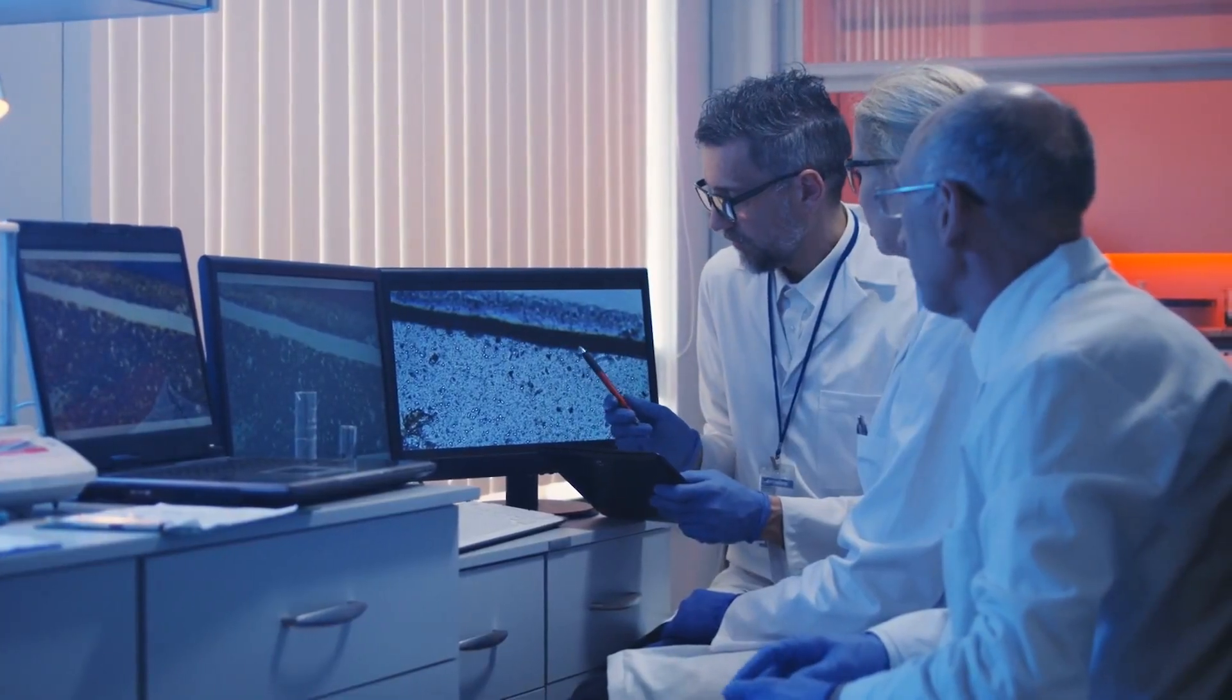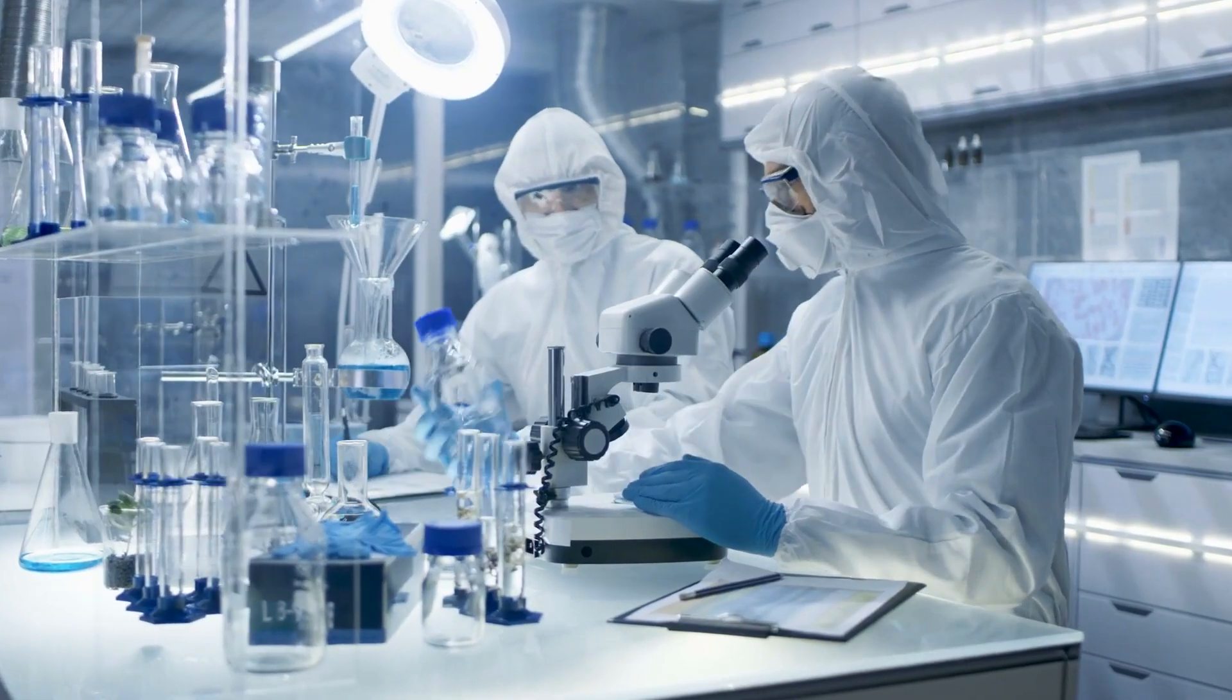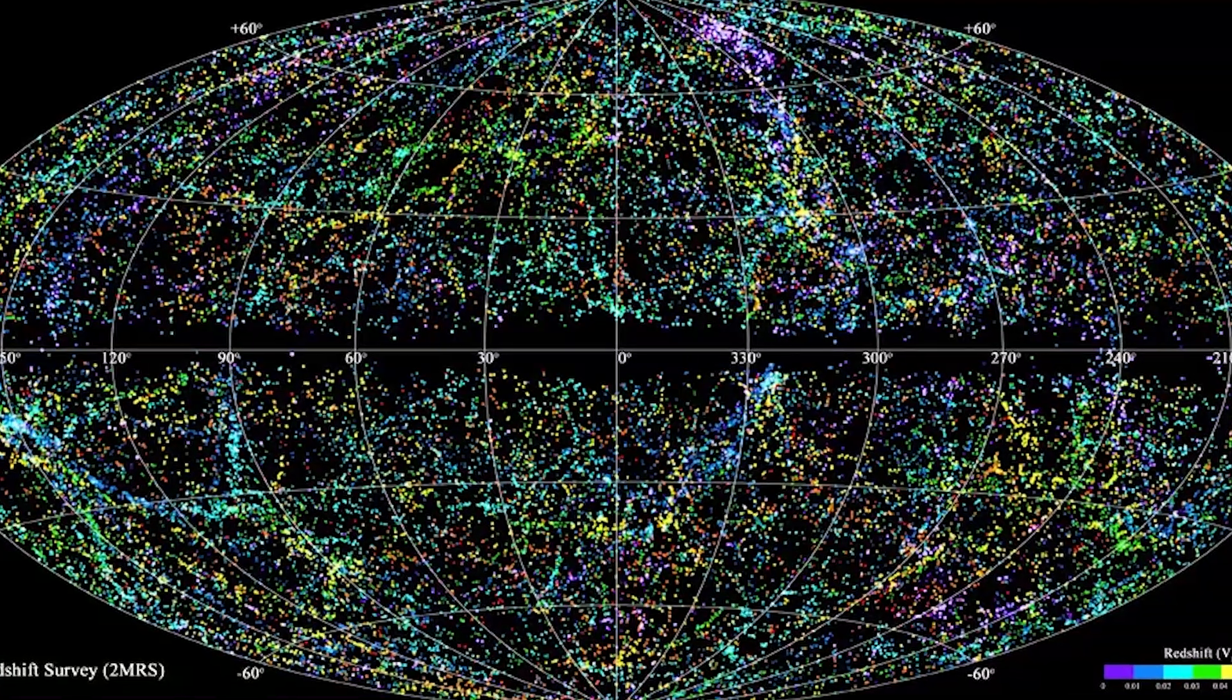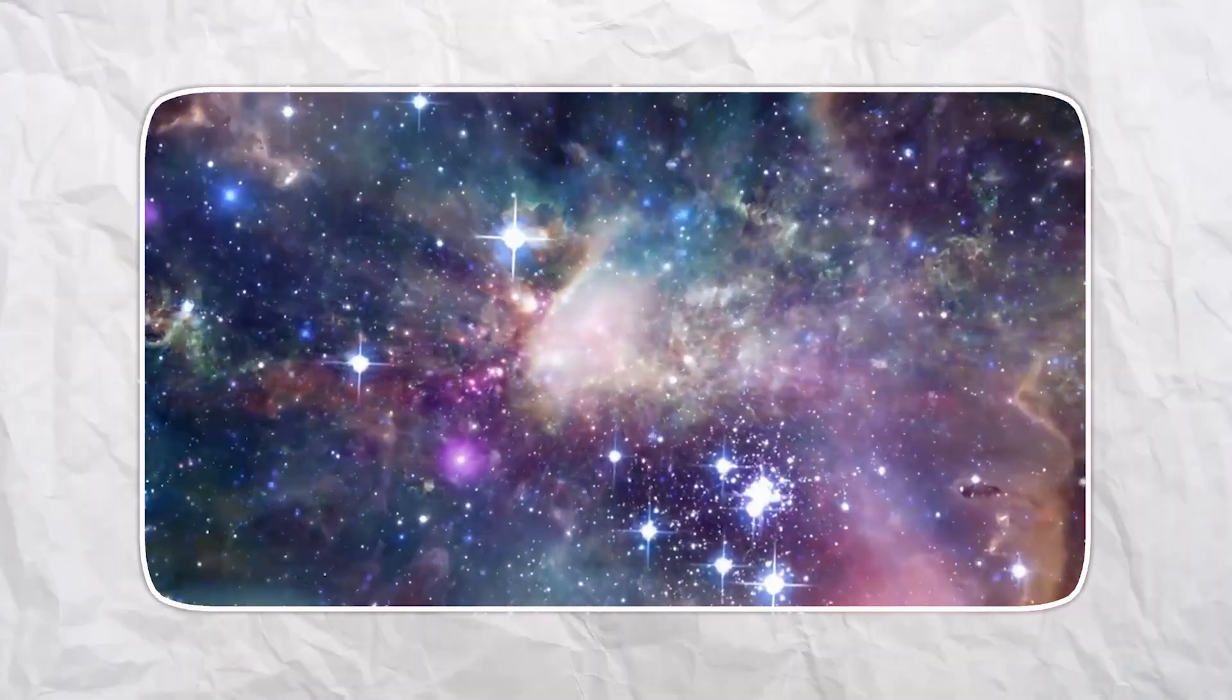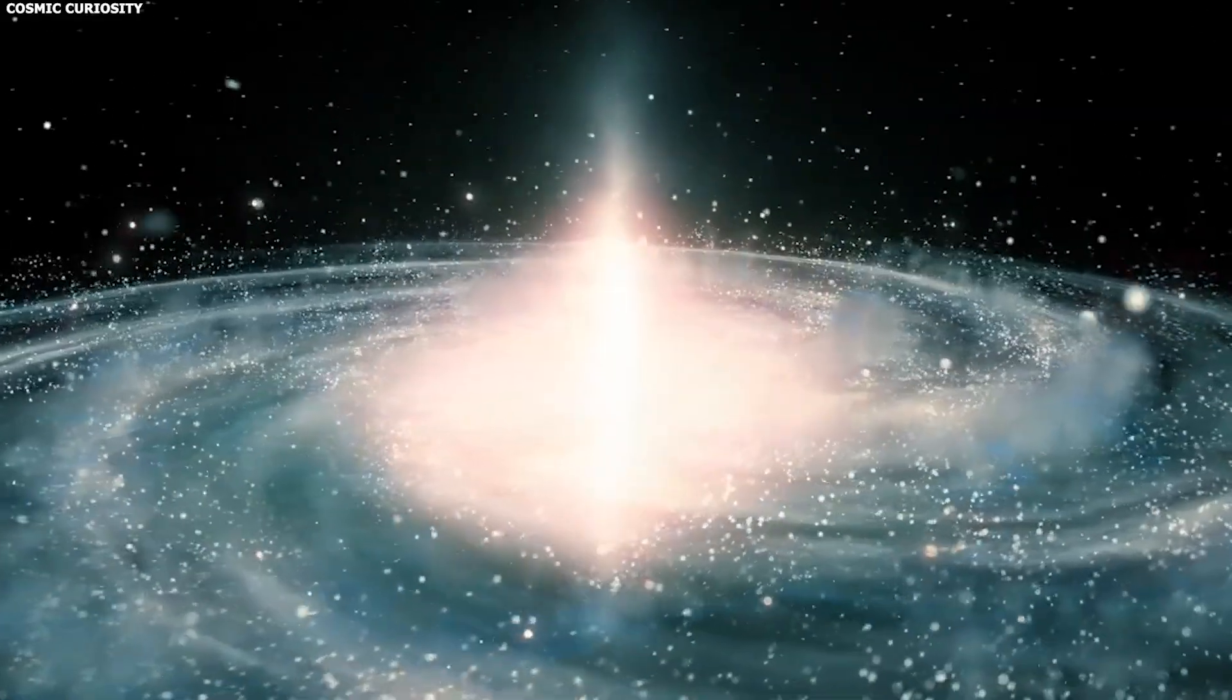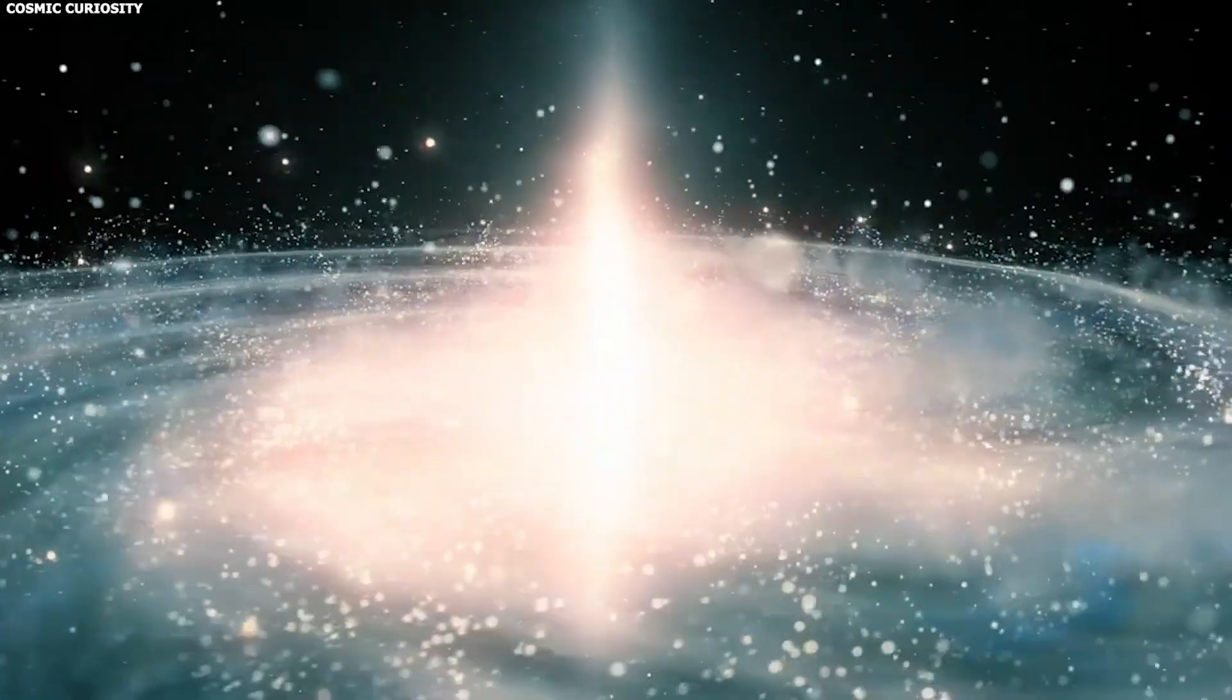Some scientists think we might even be living inside one of these impossible structures, a massive bubble called the KBC void that's about 2 billion light-years across with fewer galaxies than there should be. If that's true, then all of our measurements might be skewed by local weirdness, like trying to understand the whole ocean while sitting in a bathtub.